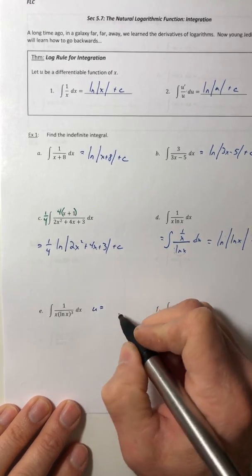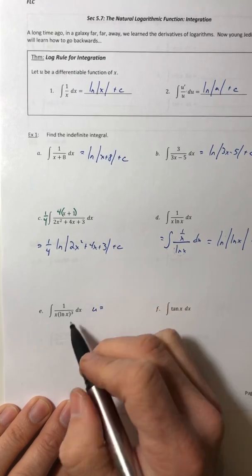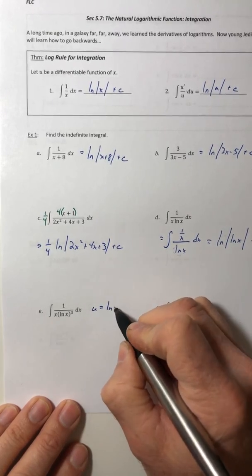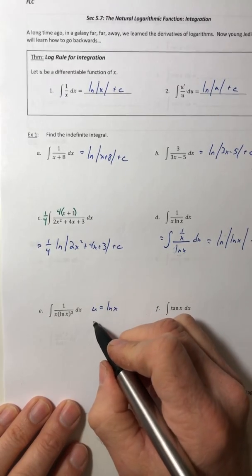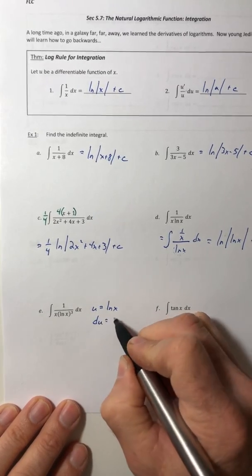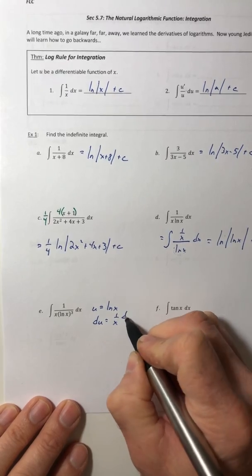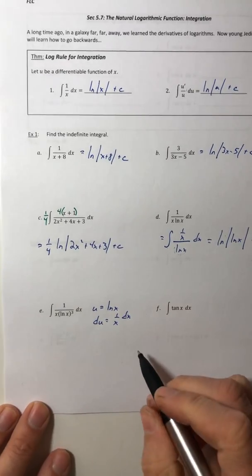So u, I'm going to let that equal ln of x because that's the stuff inside the parentheses. And then the du is 1 over x dx.